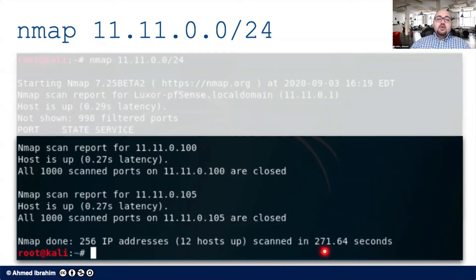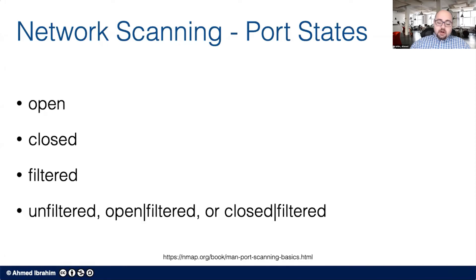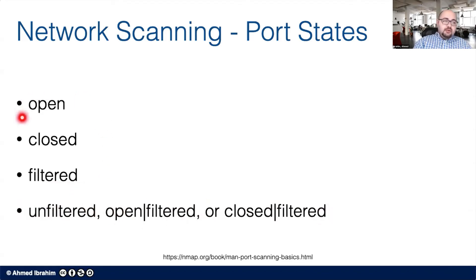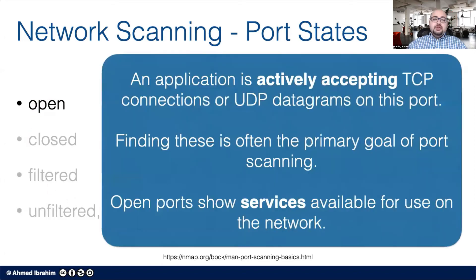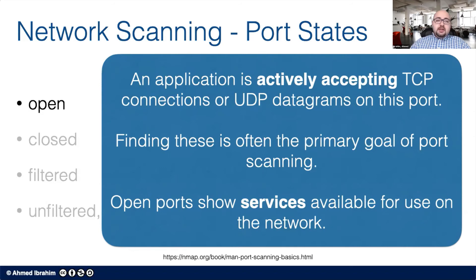There are six possible port statuses: open, closed, filtered, unfiltered, open|filtered, and closed|filtered. We'll focus on the three most important: open, closed, and filtered. An open port means the machine is actively accepting TCP or UDP connections — something is listening there. Open ports are the primary goal of port scanning, as they represent services available on the network and potential entry points for further investigation.